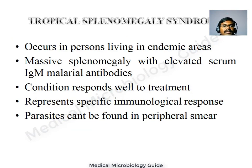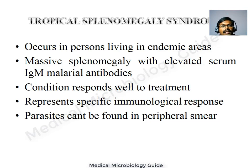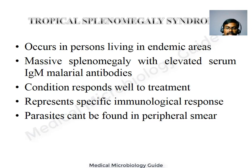Tropical splenomegaly syndrome is seen in persons living in endemic areas. There is massive splenomegaly with elevated serum IgM against malaria. The condition responds well to treatment, there are no parasites in the peripheral smear, and it represents a specific immunological response against the malaria parasite.